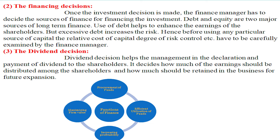The third decision is the dividend decision. The dividend decision helps management in the declaration and payment of dividends to shareholders. It decides how much of the earnings should be distributed among the shareholders and how much should be retained in the business for future expansion.